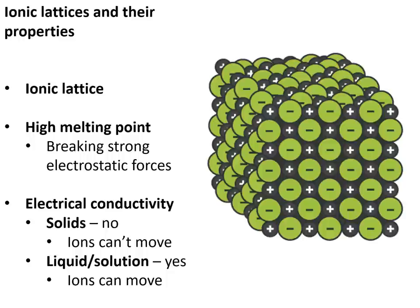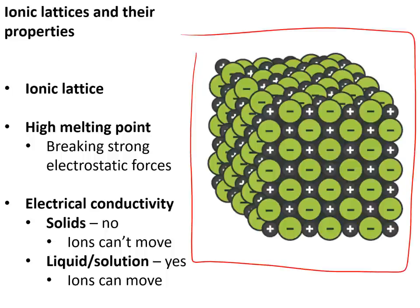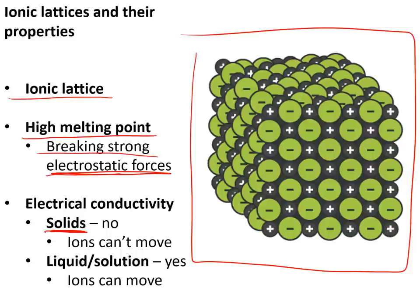Ionic compounds form a lattice structure — a three-dimensional repeating pattern of ions alternating positive and negative. They have a high melting point because melting requires breaking strong electrostatic forces, which takes a lot of heat energy. They do not conduct electricity when solid because the ions cannot move, but if you melt them or dissolve them they do conduct electricity because the ions become free to move.